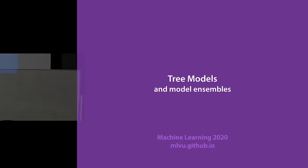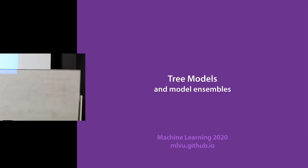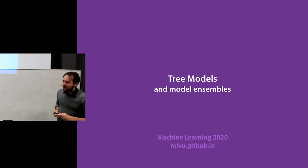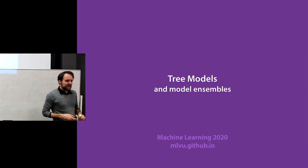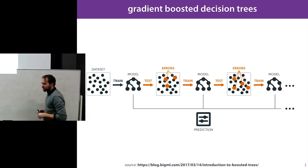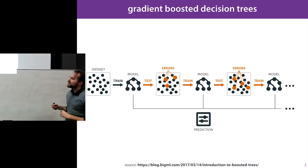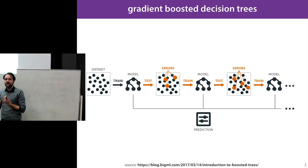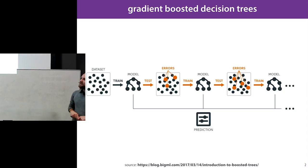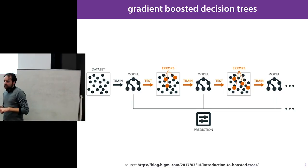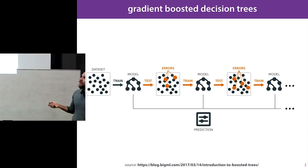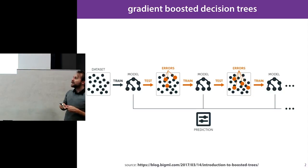Today we're going to talk about tree-based classifiers, tree models, and model ensembles. These are not strictly related topics — you can use model ensembles on any kind of model — but in practice they are often used with trees. One of the most popular algorithms in classical machine learning is the gradient boosted decision tree, a combination of decision trees with gradient boosting. This is a very good out-of-the-box method, and if you want to win a Kaggle competition, this is usually the place to start.